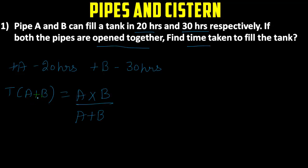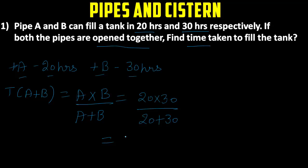Time taken by A and B together is A×B divided by A+B. We use A+B as both A and B are positive. With A = 20 and B = 30, we get 20×30 divided by 20+30, which is 600 divided by 50. Simplifying, the answer is 12 hours.